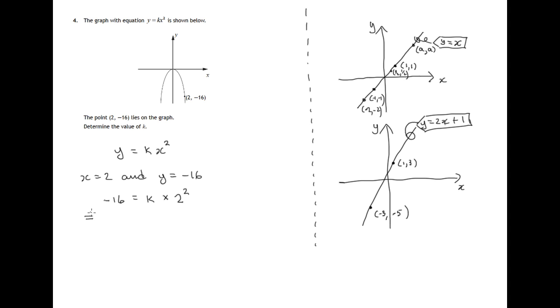So let's continue and solve this equation. So negative 16 will be k times 2 squared. 2 times 2 is 4. So 4k is equal to negative 16. We'll just write it the other way around. 4k equals negative 16. Let's divide both sides by 4. That'll give us 1k. Negative 16 over 4 will be negative. 4 into 16 goes 4. So the value of k is negative 4. That's your answer.